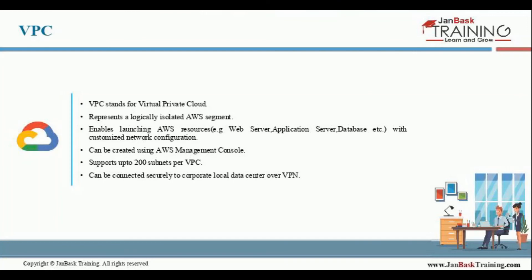VPC can be created using the AWS management console. It supports up to 200 subnets per VPC, so you can create as many as 200 subnets per Virtual Private Cloud.